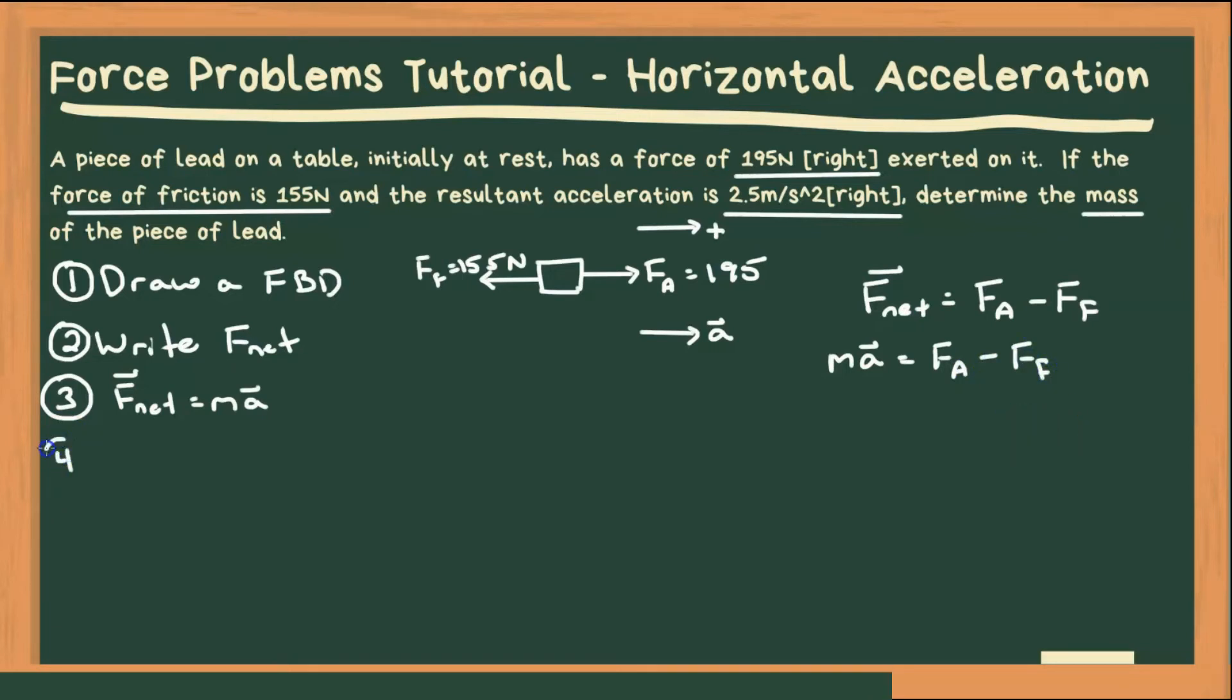And finally, we are going to solve. Alright, so in this case, we're looking for mass. So let's put in everything else that we know. So we have mass times acceleration, which is 2.5 meters per second squared. And that is going to equal our applied force, which is 195 newtons, minus our frictional force, which is 155 newtons.